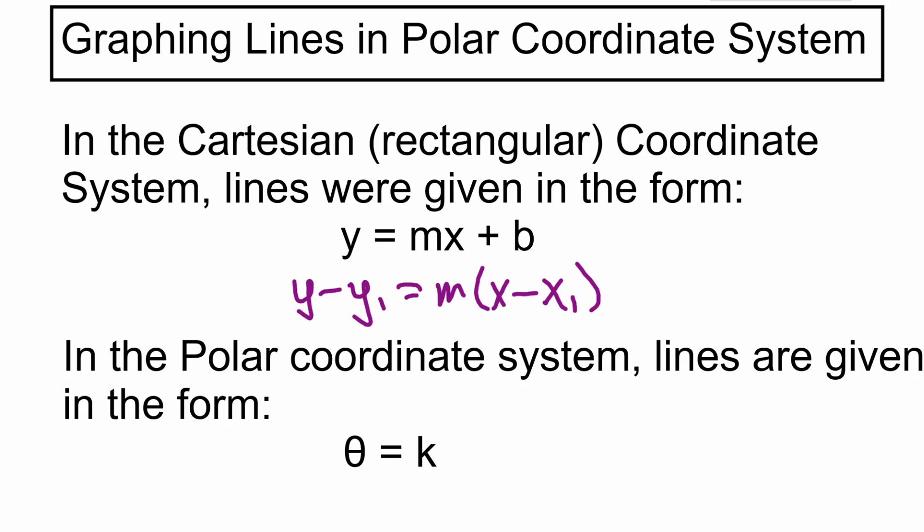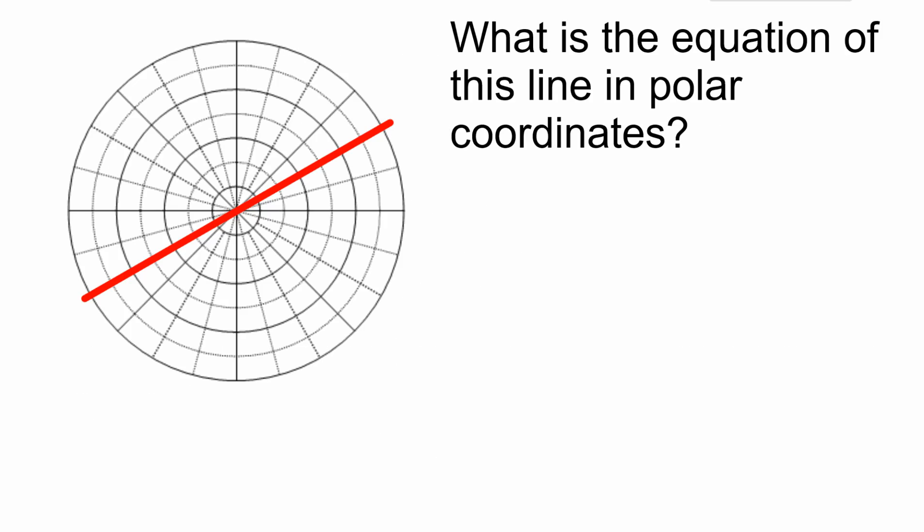Let's look at an example and figure out how to write an equation for this line. I've got a red line here. What's the equation for this line in polar coordinates? Pause and think about it.